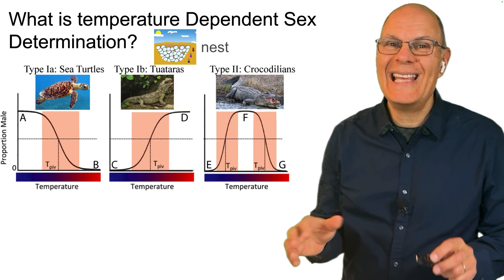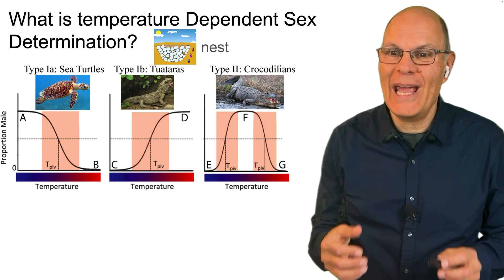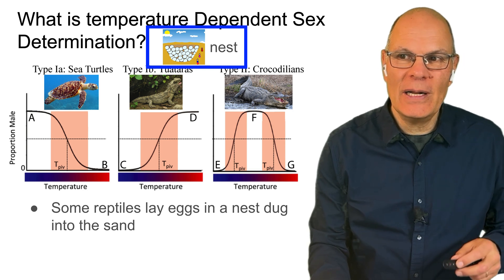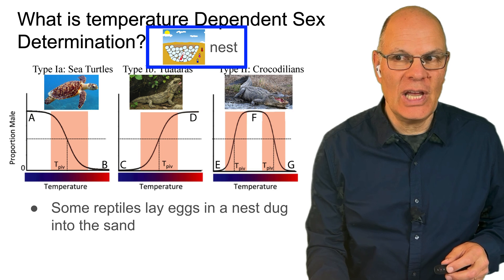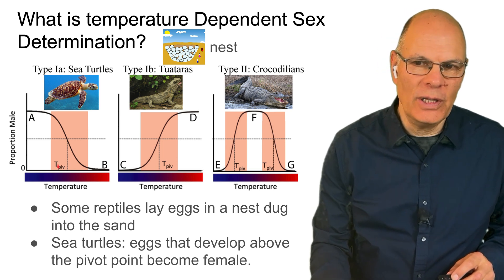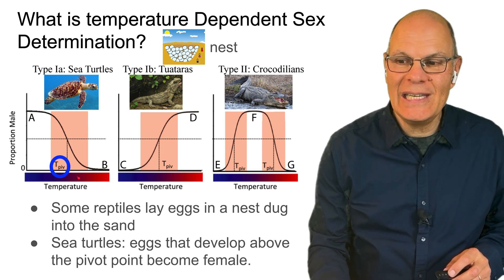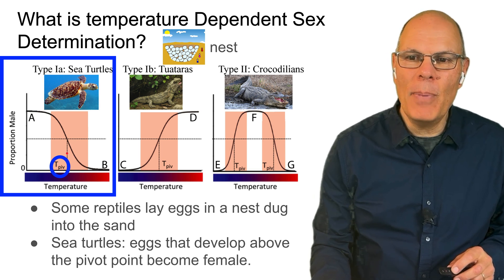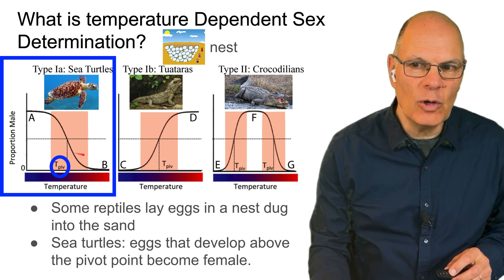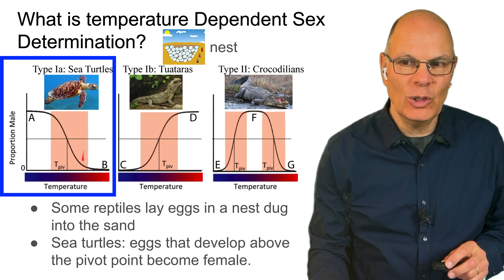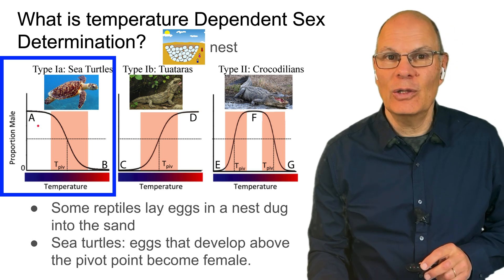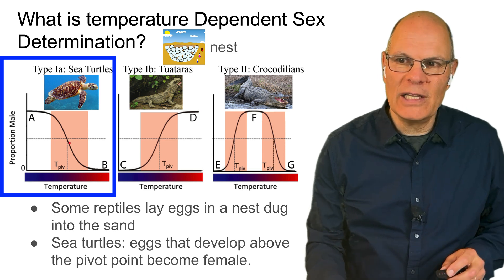Among certain reptiles, sex is determined by the temperature at which the embryos develop. Some reptiles lay their eggs in a nest dug in the sand — it's warmer on top, closer to the sun, and cooler down below. These animals develop based on a pivot point, represented as T-PIV. In sea turtles, eggs that develop above the pivot point — in the warmer area — become female, while eggs in the cooler area below the pivot point develop into males. At the pivot point itself, it's pretty much random, 50-50.